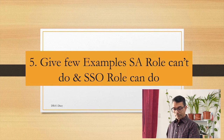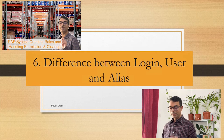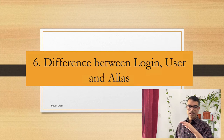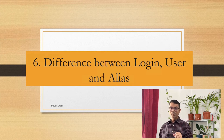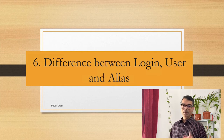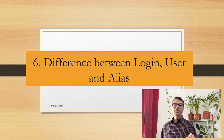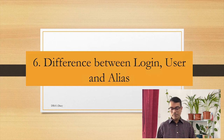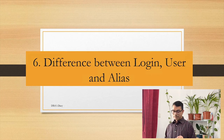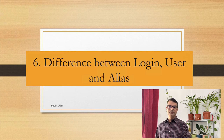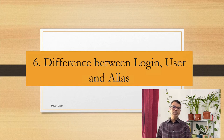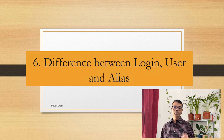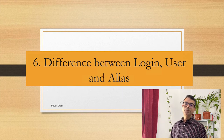Difference between login, user, and alias: login is at the database instance level — the instance contains all databases. User is at the database level; you map a login to a user within a specific database. Alias is also at the database level, not the instance level. Alias allows you to use a different login for a user that already exists. Alias is mostly used when you want to add a login as an alias to dbo, which gives it all the permissions of the database owner.